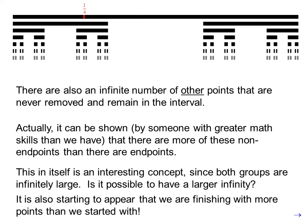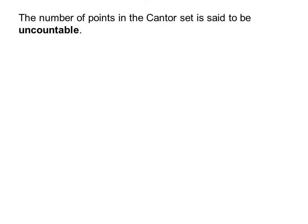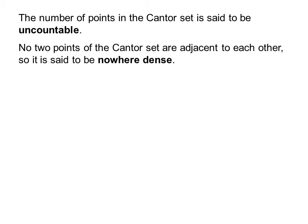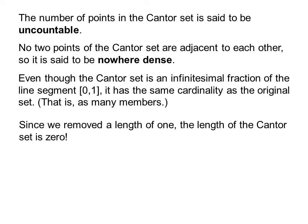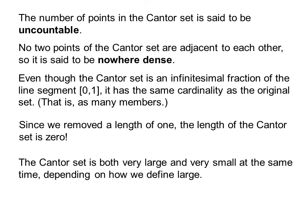It is also starting to appear that we are finishing with more points than we started with. The number of points in the Cantor Set is said to be uncountable. No two points of the Cantor Set are adjacent to each other, so it is said to be nowhere dense. Even though the Cantor Set is an infinitesimal fraction of the line segment from 0 to 1, it has the same cardinality as the original set — that is, as many members. Since we removed a length of 1, the length of the Cantor Set is 0. The Cantor Set is both very large and very small at the same time, depending on how we define large. So this should give you something to think about.